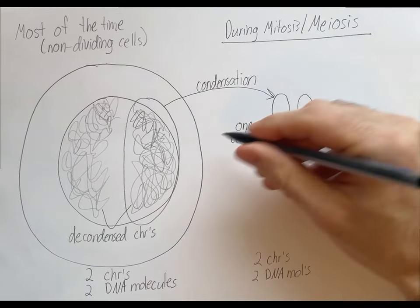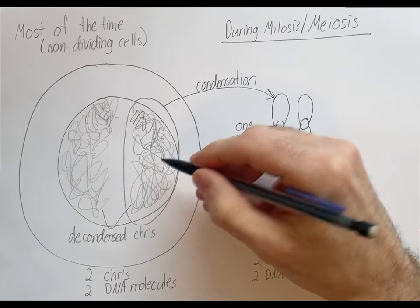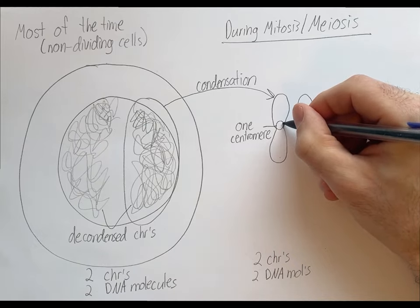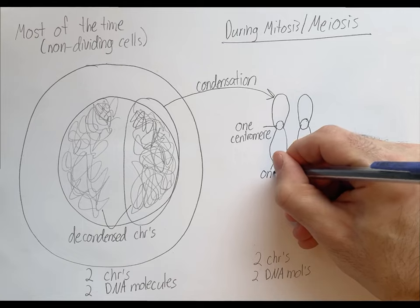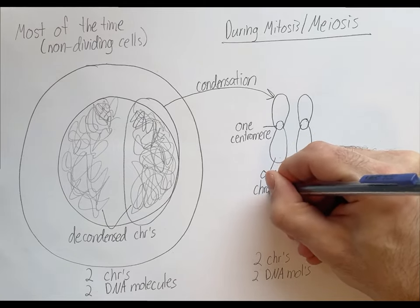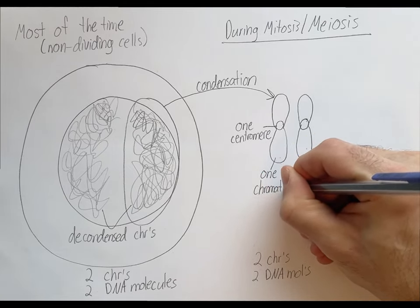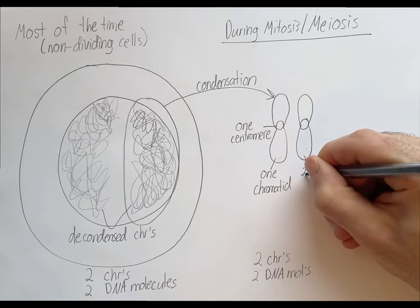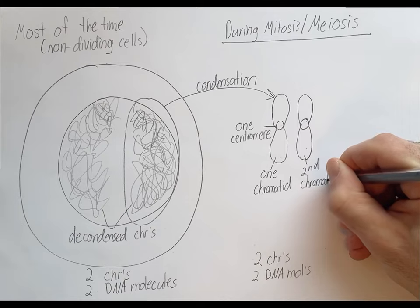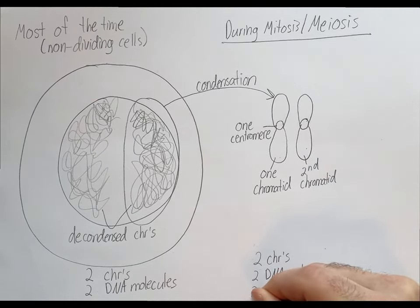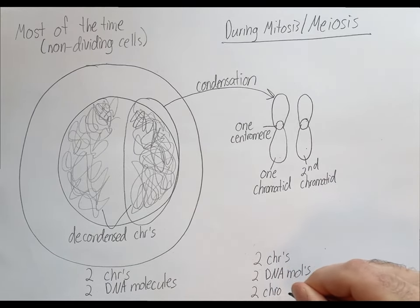Okay. Now once chromosomes condense from a decondensed form into a condensed form, they are now known as chromatids. So this is one chromatid, and this is a second chromatid. So we see two chromatids in this picture.